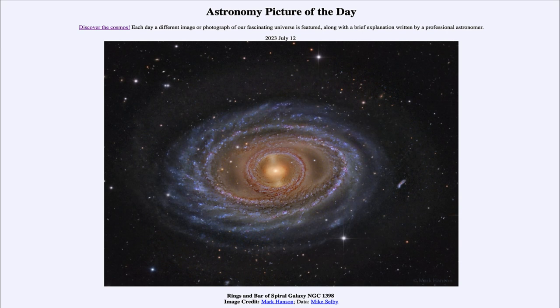So that was our picture of the day for July 12th of 2023. It was titled Rings and Bar of Spiral Galaxy NGC 1398. We'll be back again tomorrow for the next picture. So until then, have a great day everyone and I will see you in class.